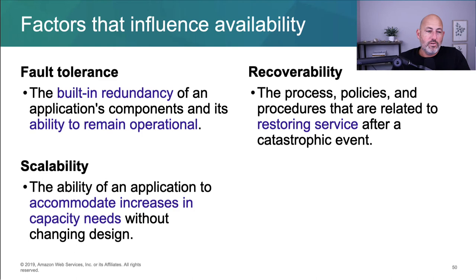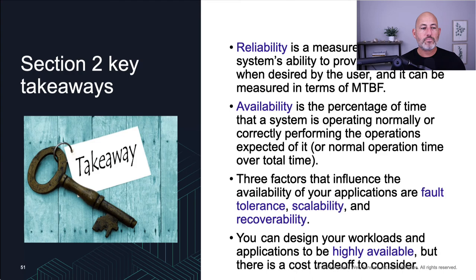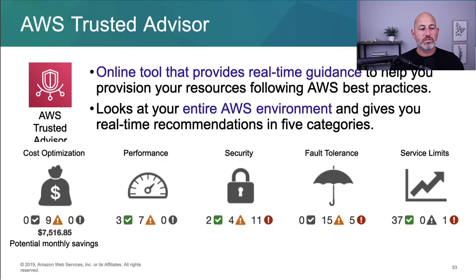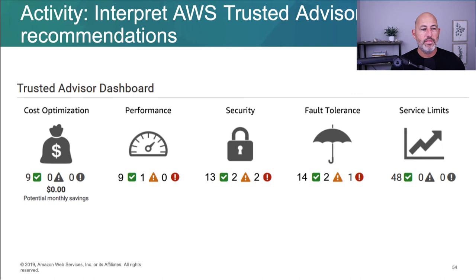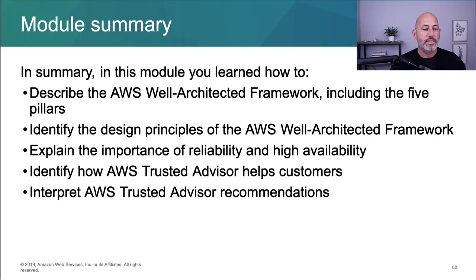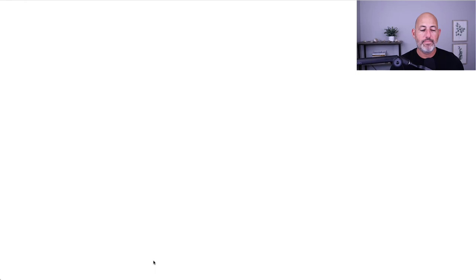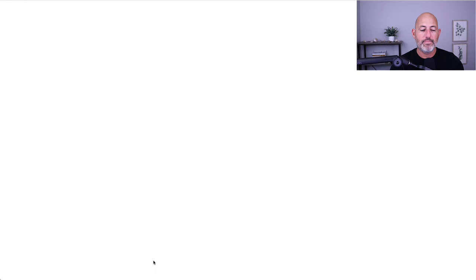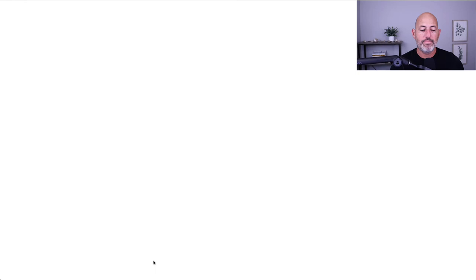Factors influencing availability include fault tolerance — redundancy built in — scalability, and recoverability. AWS Trusted Advisor is very useful: it periodically tells you things like cost issues, performance problems, security gaps, fault tolerance weaknesses, and service limits, giving you pointers on what to fix. That takes us through cloud architecture.